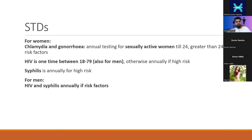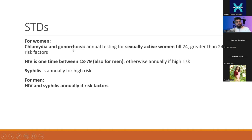For sexually transmitted diseases, the first group is chlamydia and gonorrhea. This is annual testing indicated for sexually active women under 24 years of age. They may give you an age like 21 or 22, but only if the woman is sexually active does this apply. Above 24 years of age, testing is only done with risk factors: multiple sexual partners, inconsistent contraception use, history of violence, incarceration, or settings with higher STI incidence.